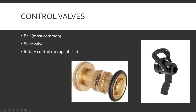Control valves for nozzles: there's ball valves, slide valves, and rotary control valves. Ball valves are the most common. You look in the base of your nozzle, pull the lever, and you can see the little ball in there rotate. There's a spot where it's closed and blanked off so water can't get through, and when it's open you can see through the ball to the other end of the nozzle.